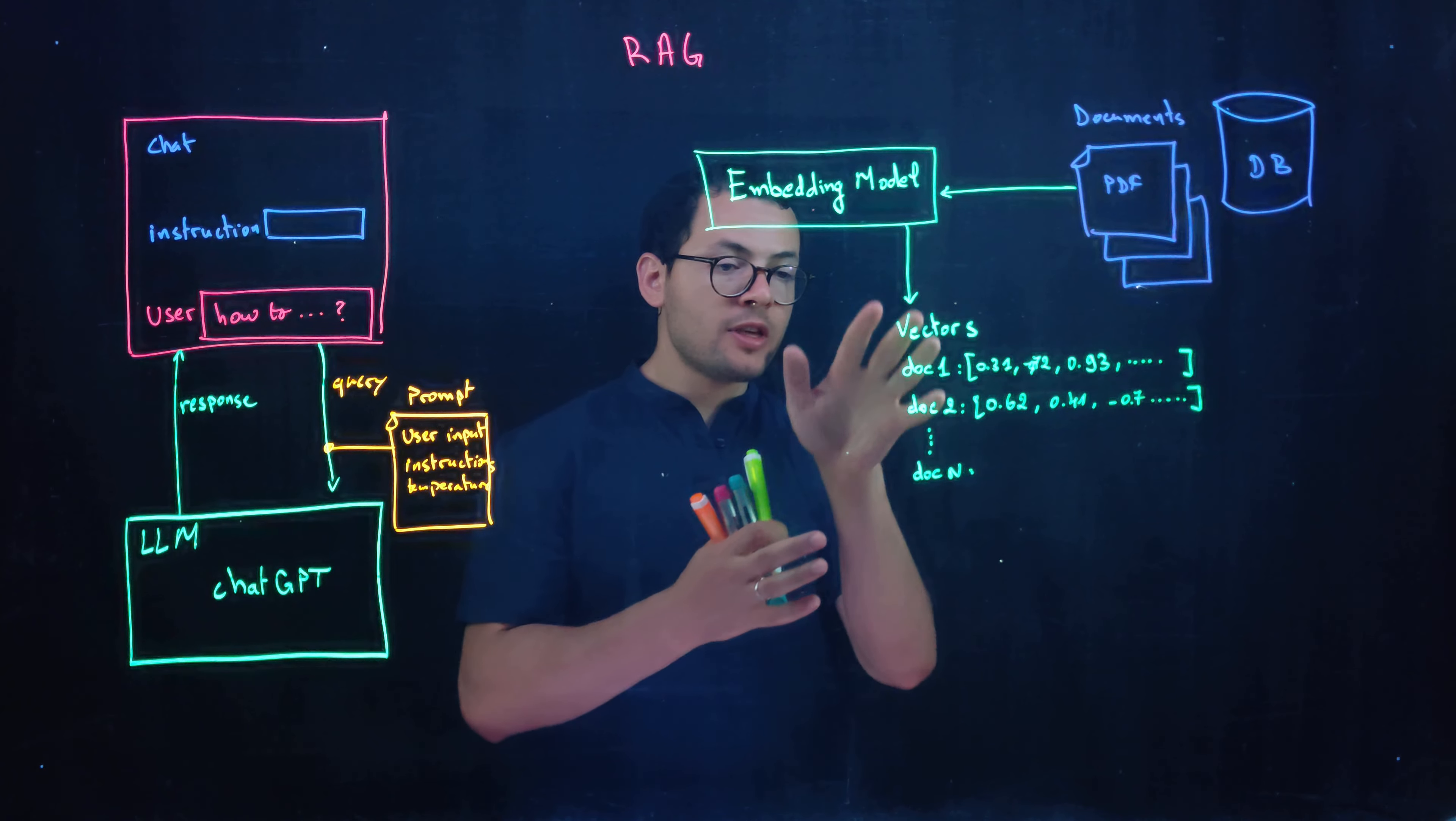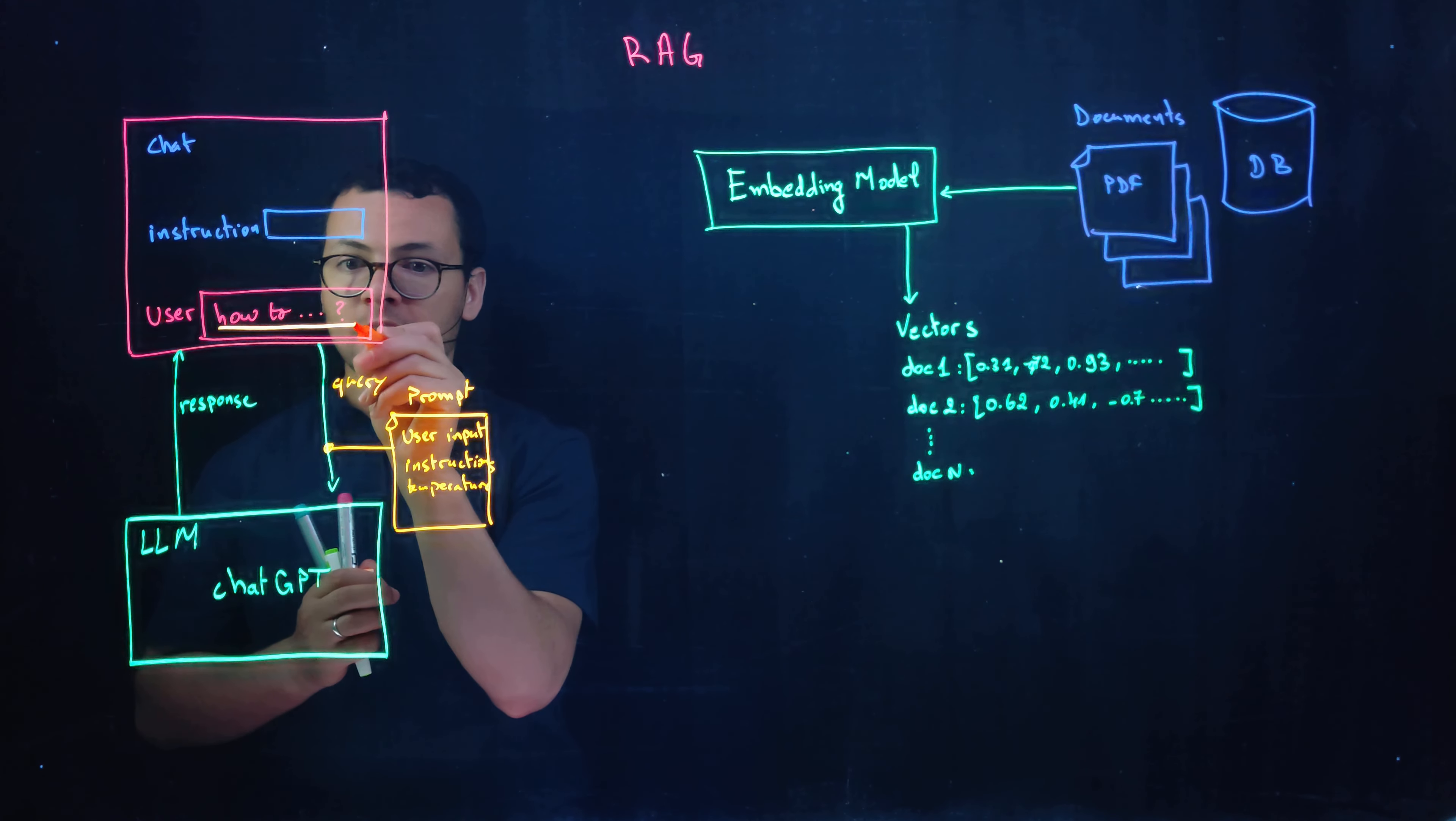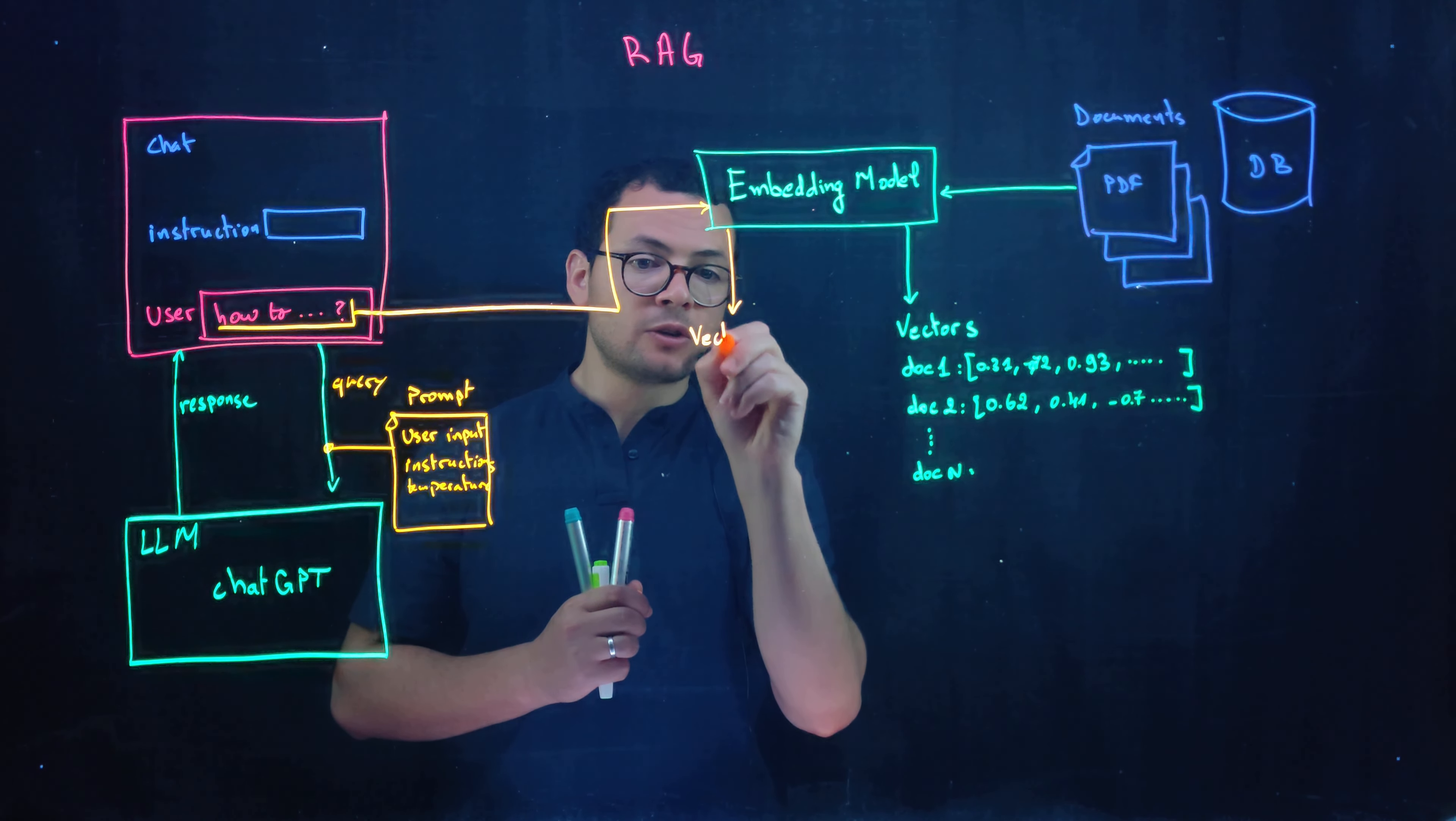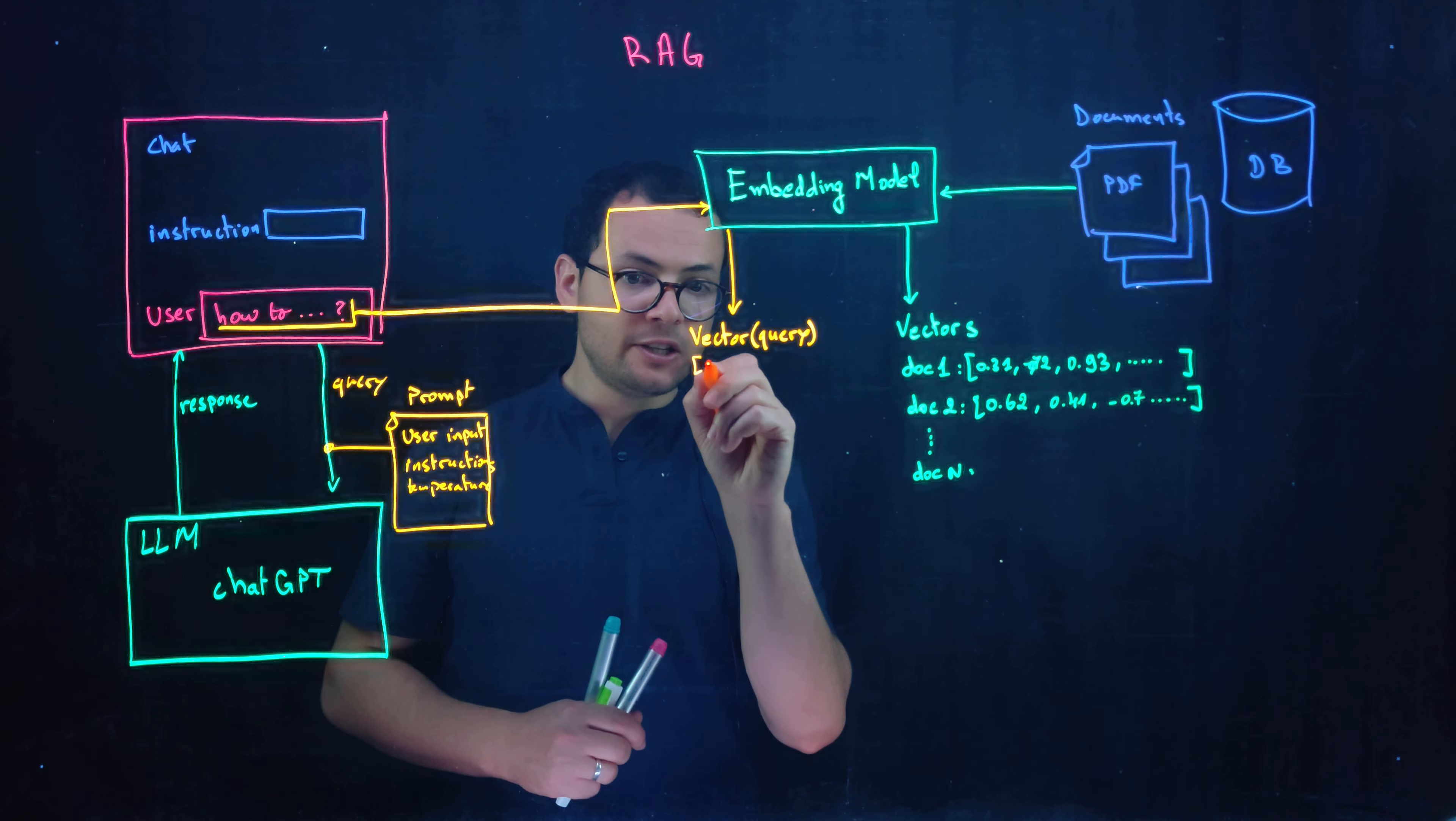Now we are ready to search within these documents. So what will happen next is that we'll take the user query and we'll go to create an embedding for it. So here we'll get another vector that is the user vector or the vector for the query of the user. So again that vector has the same representation right here.